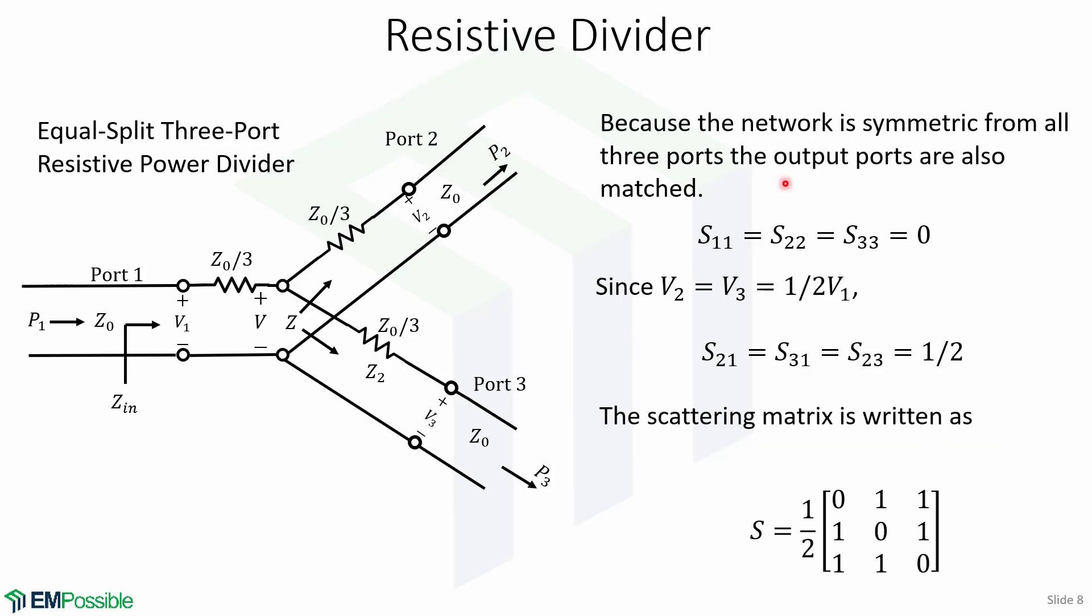As I said before, the network is symmetric from all three ports. Therefore, the output ports are also matched. This means that S11, S22, and S33 equals zero. Since the voltage at port 2 and port 3 is equal to one half of V1, S21, S31, and S23 equals one half.